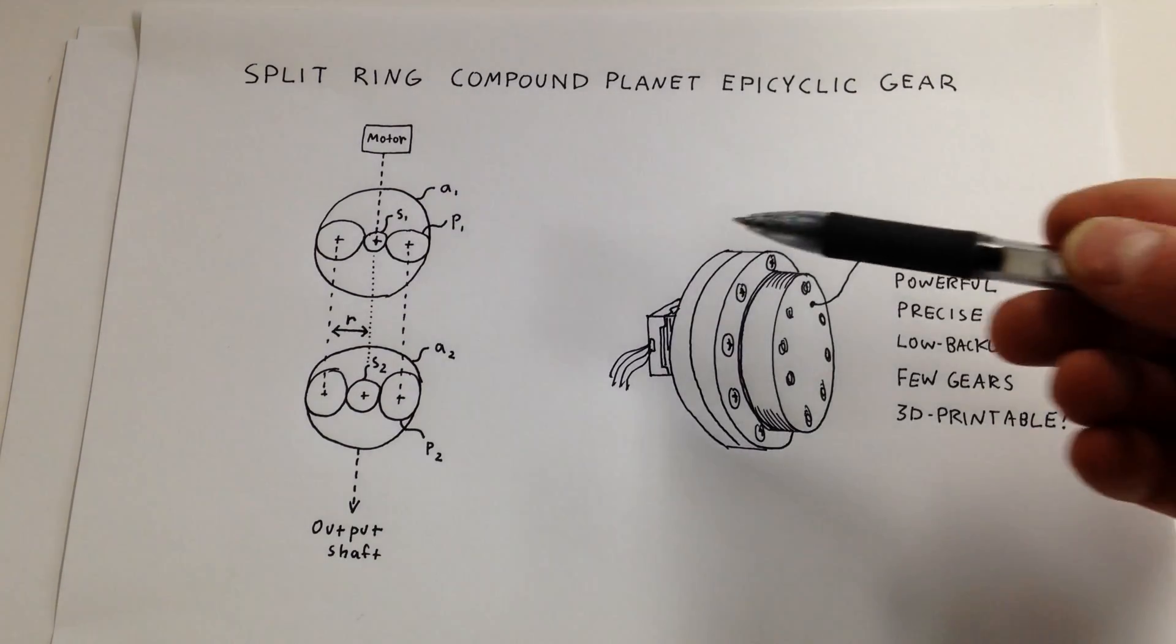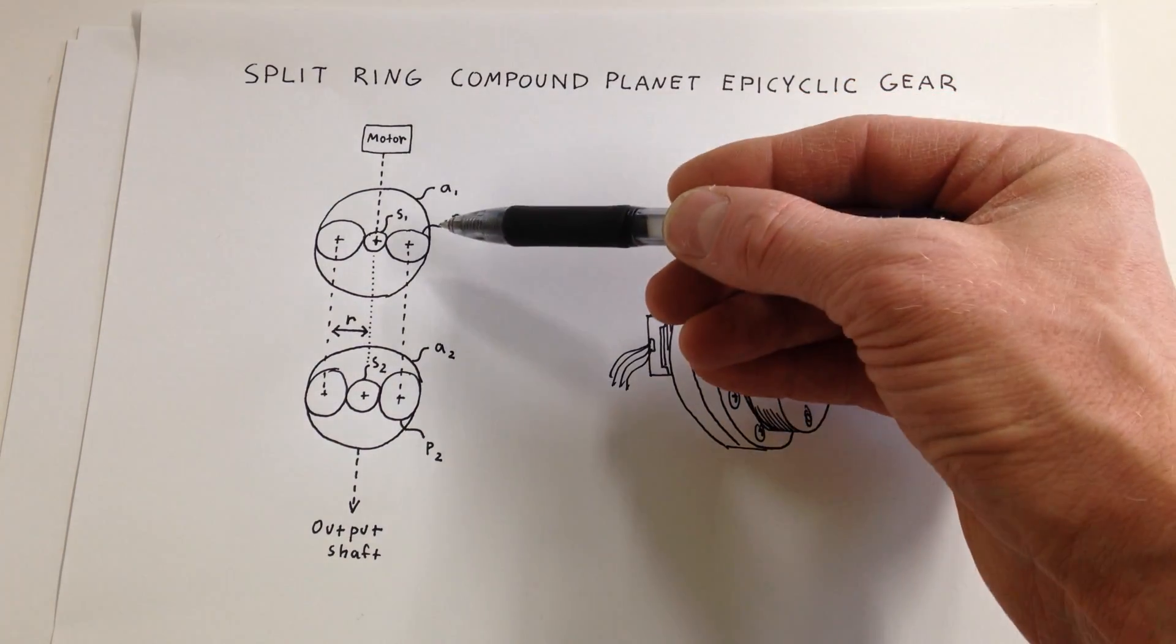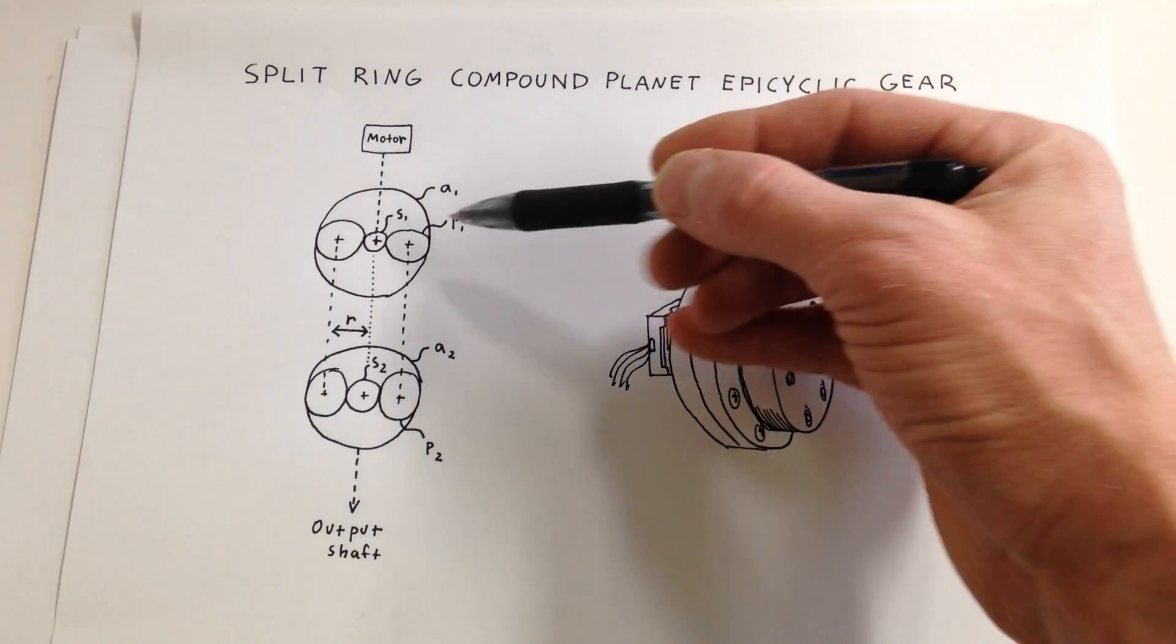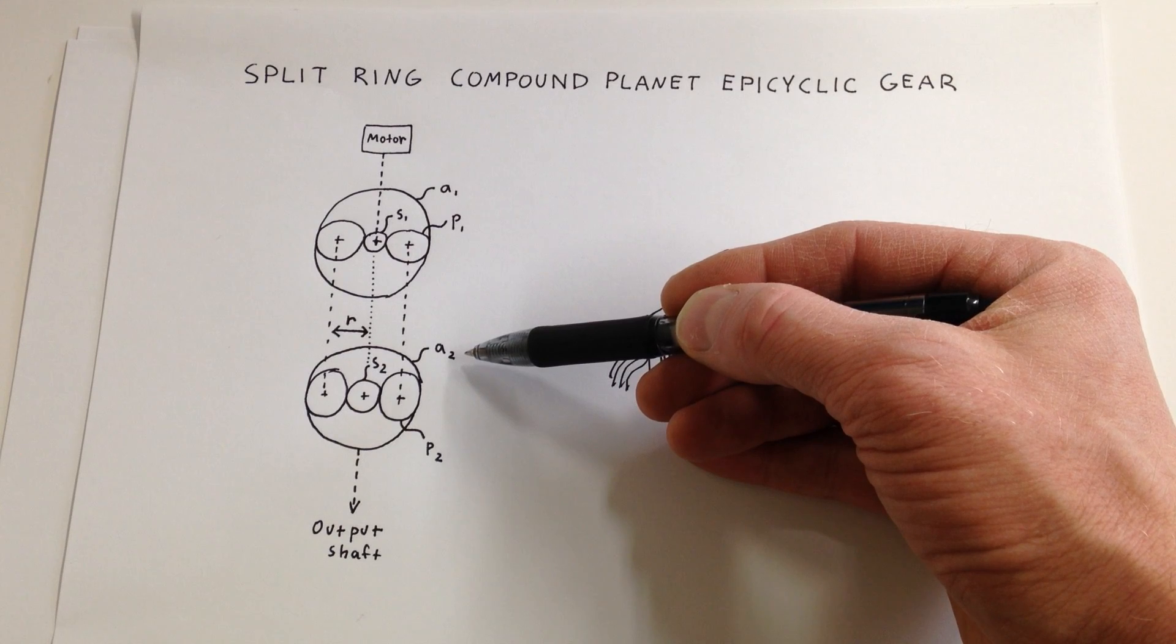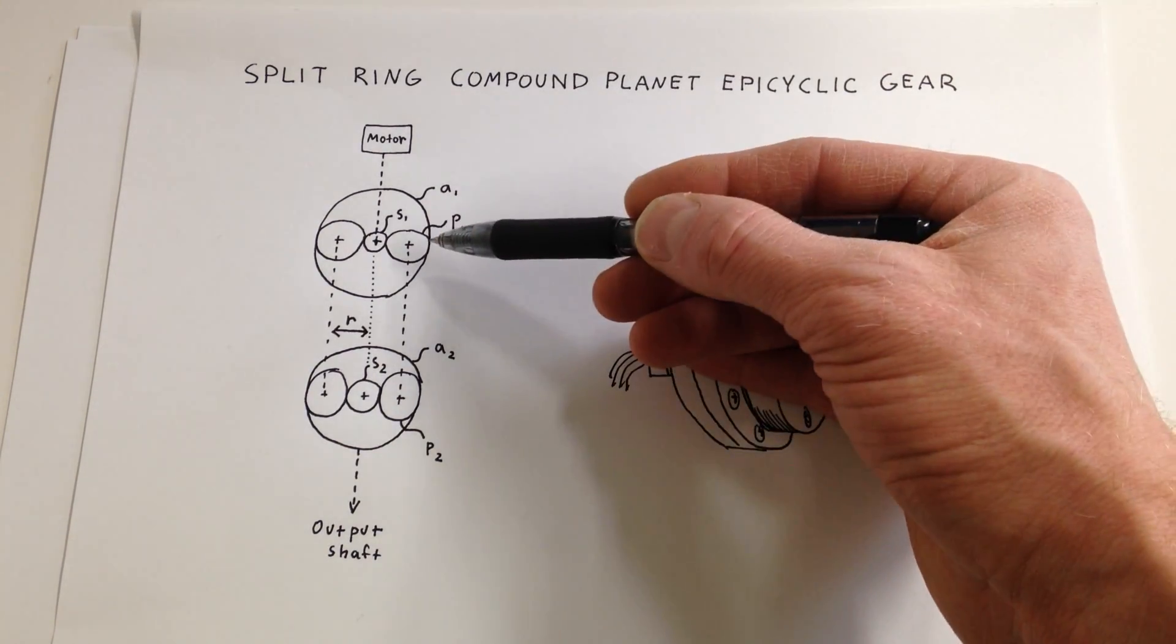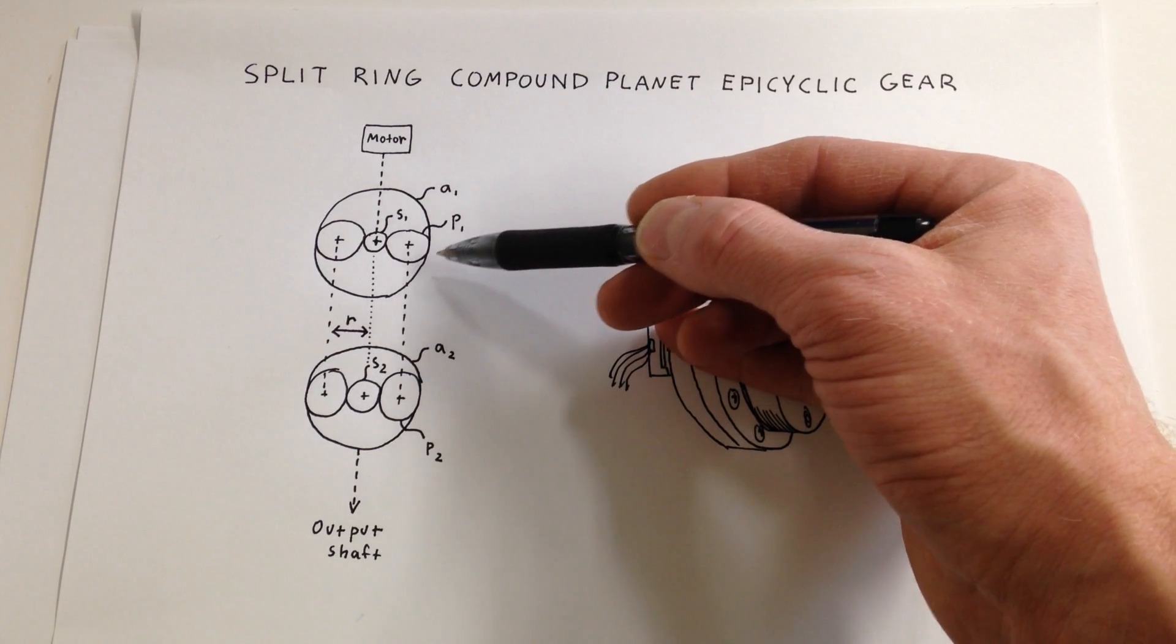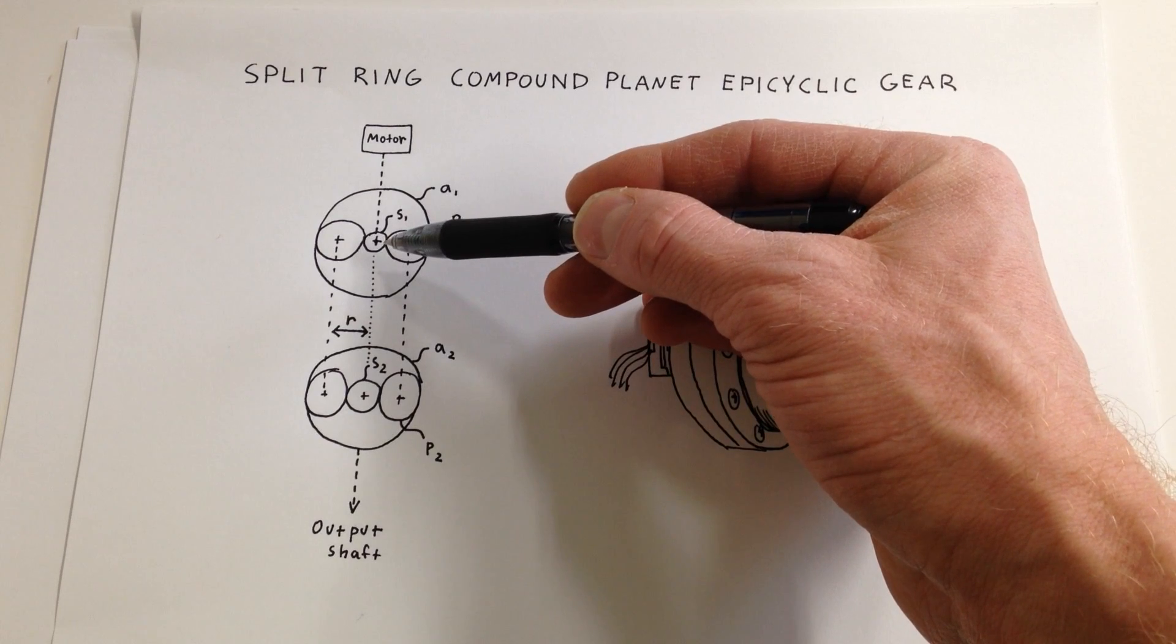I want to show you what I mean by split ring, meaning it uses an internal gear - actually it uses two of them, so they're split. You have one annulus, A1, and a second annulus, A2. There are planetary gears that rotate around the inside, P1-type gears, P2-type gears, and then there are two suns.